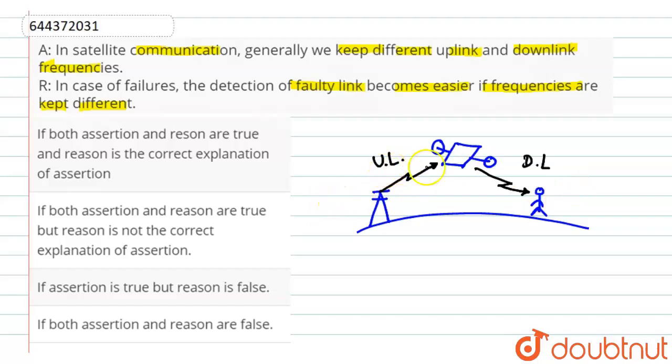So here the uplink frequency and downlink frequency are kept different because if there is certain failure in the link, that is in the uplink or downlink, then it is easier to detect that faulty link.